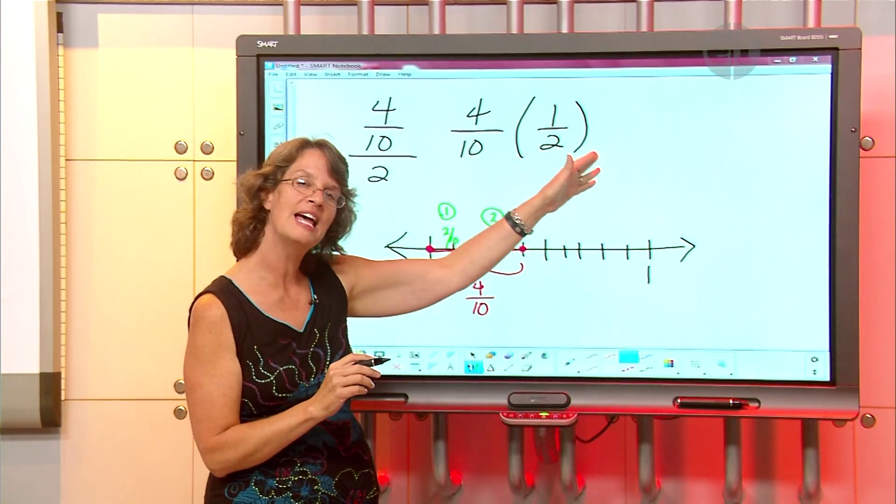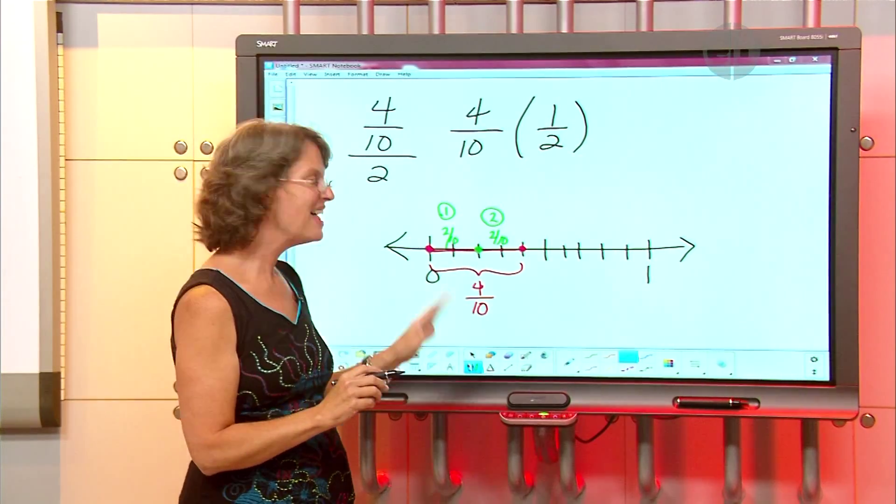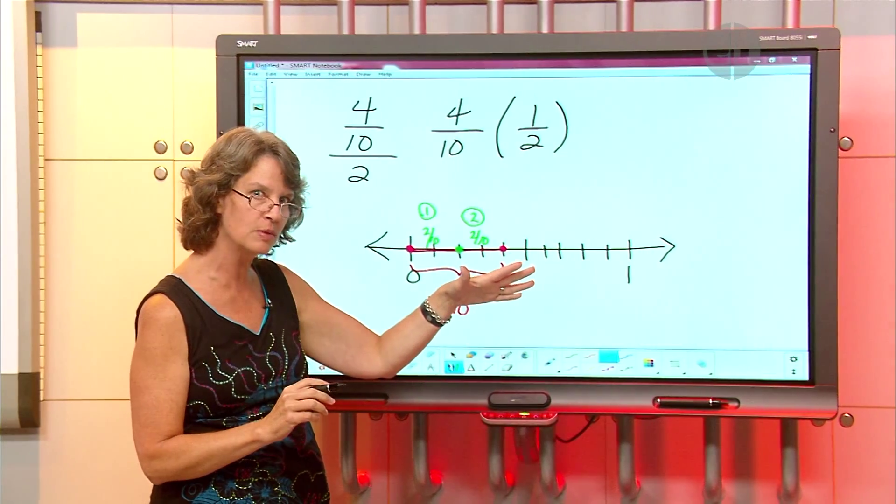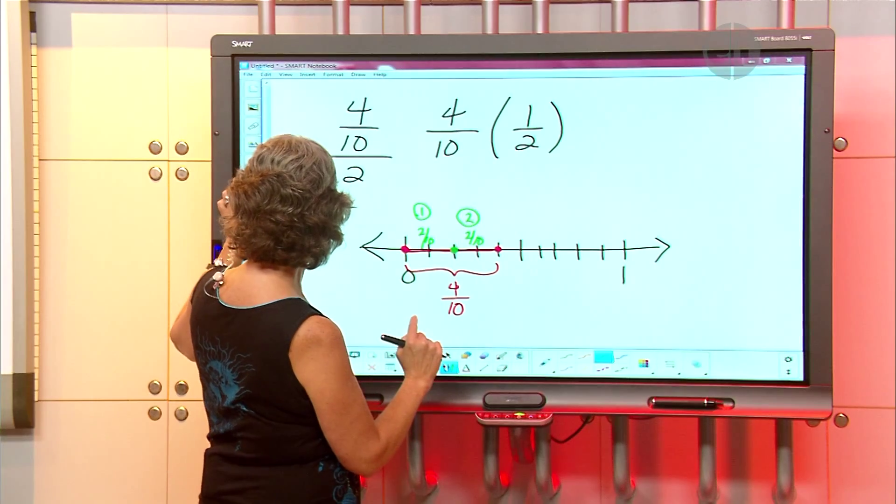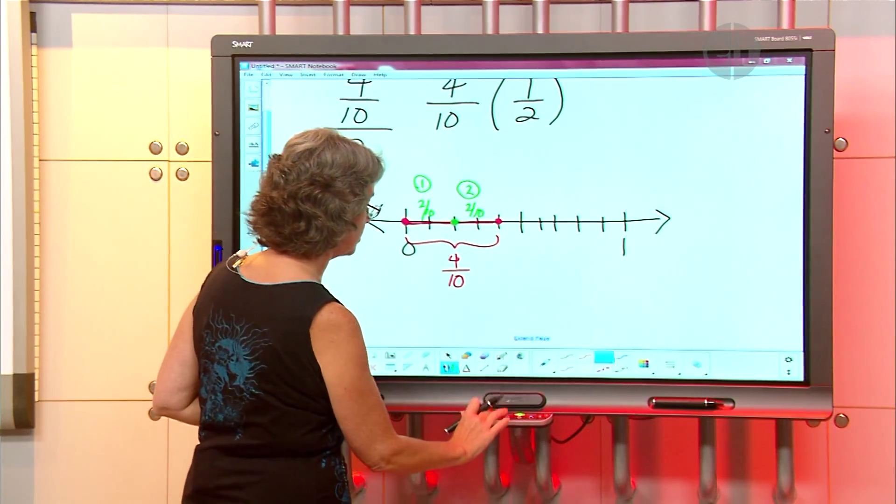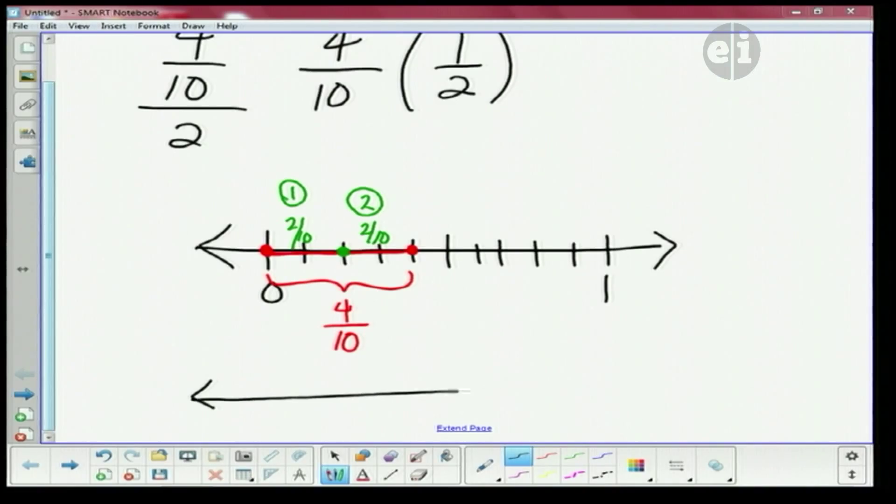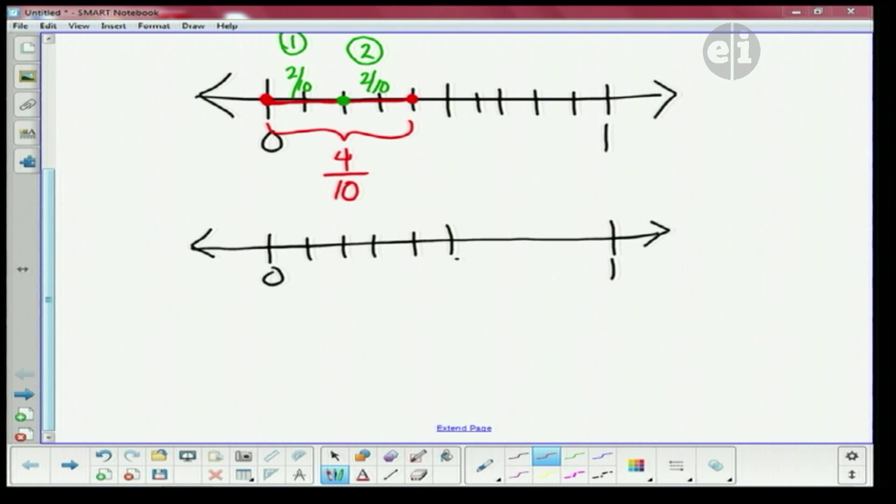Okay. So now we got to do the four tenths times one-half. That whole breaking it into two parts was easy right? Yes. So now I'm gonna do just another number line right below it. Okay. This way you can see the two pieces. And one, two, three, four. Okay there we go. We got our four tenths. Again I'm gonna put it in there. Four. There's my four tenths again.